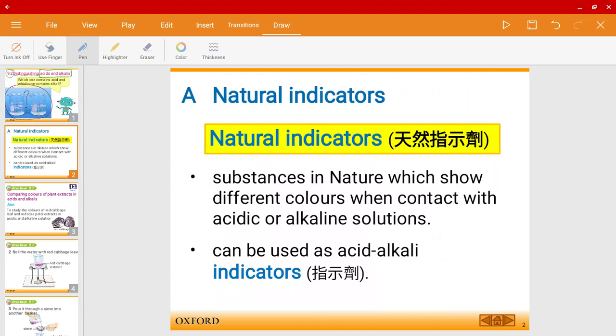So the first method or first way to identify them is by using natural indicators. Natural indicators are substances that you can find in nature, such as plants. These substances allow us, it shows us different colors when they come into contact with acidic or alkaline solutions. So for example, if you use a natural indicator on an acid, it might show you a red color for an acid.